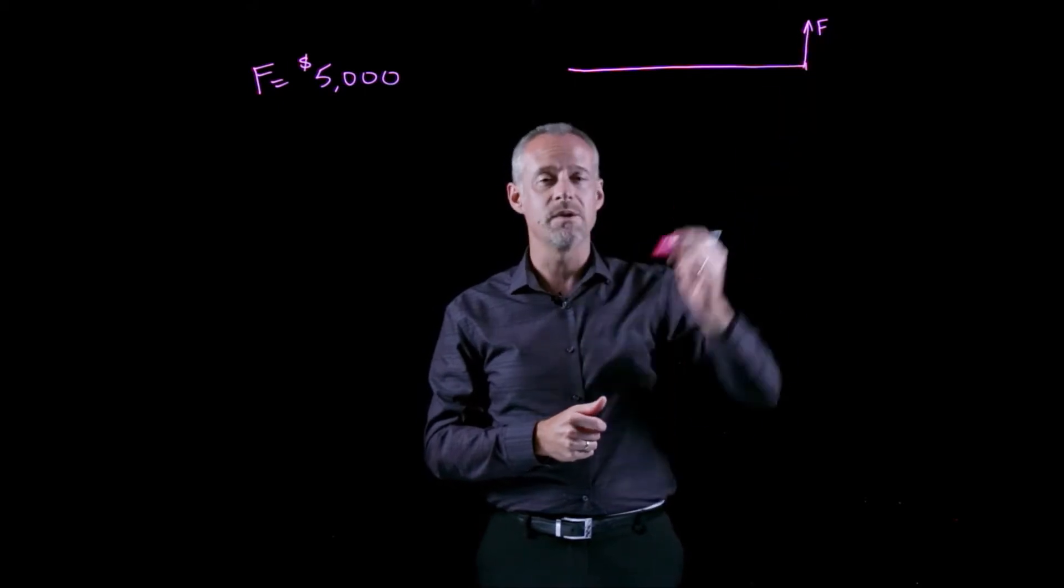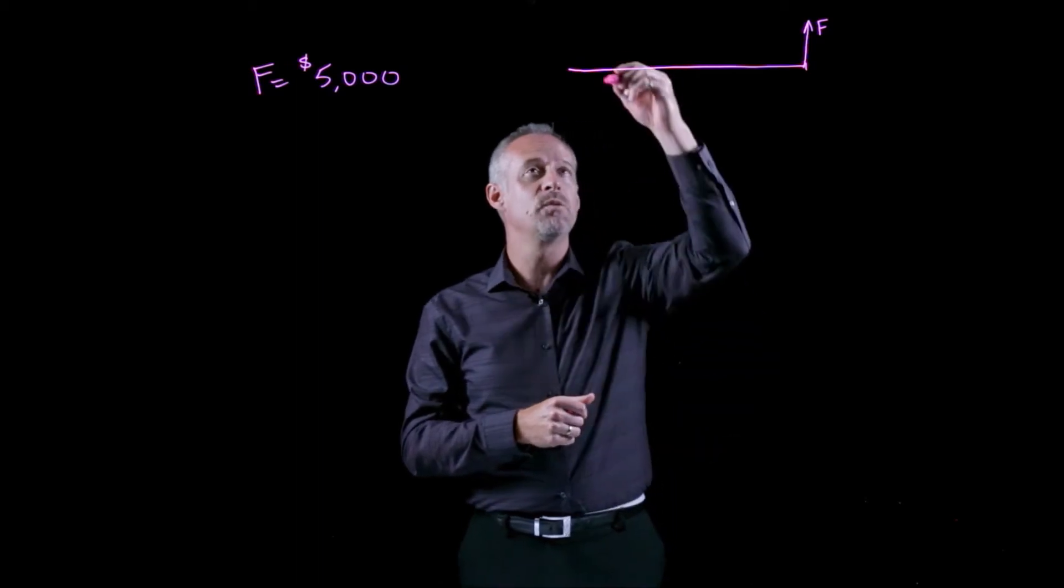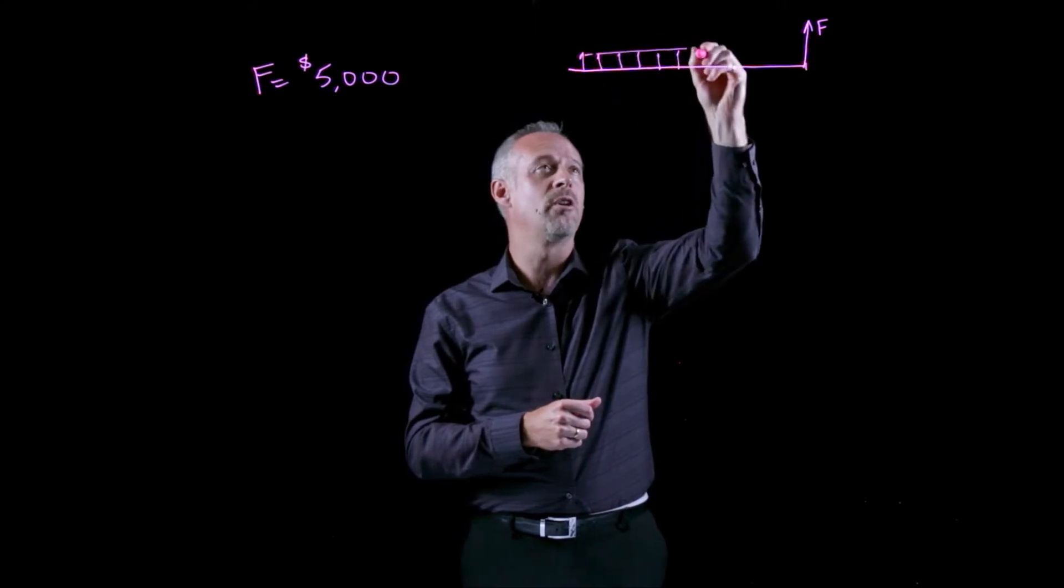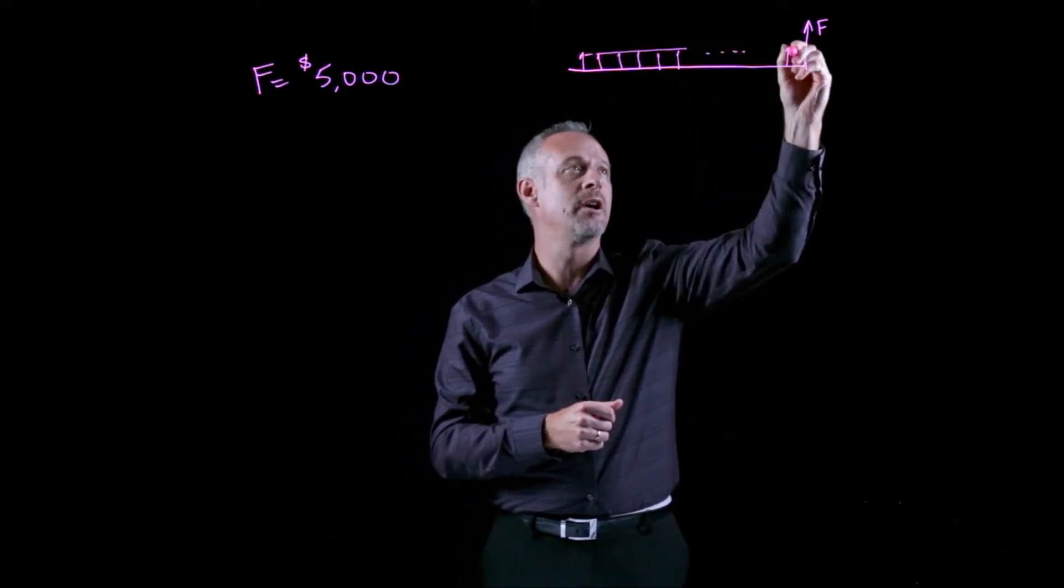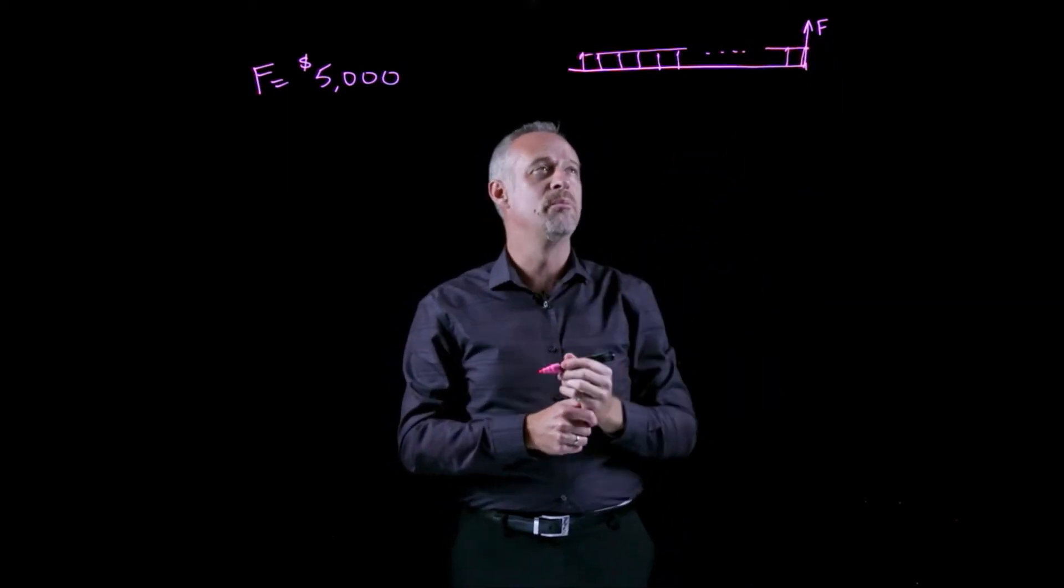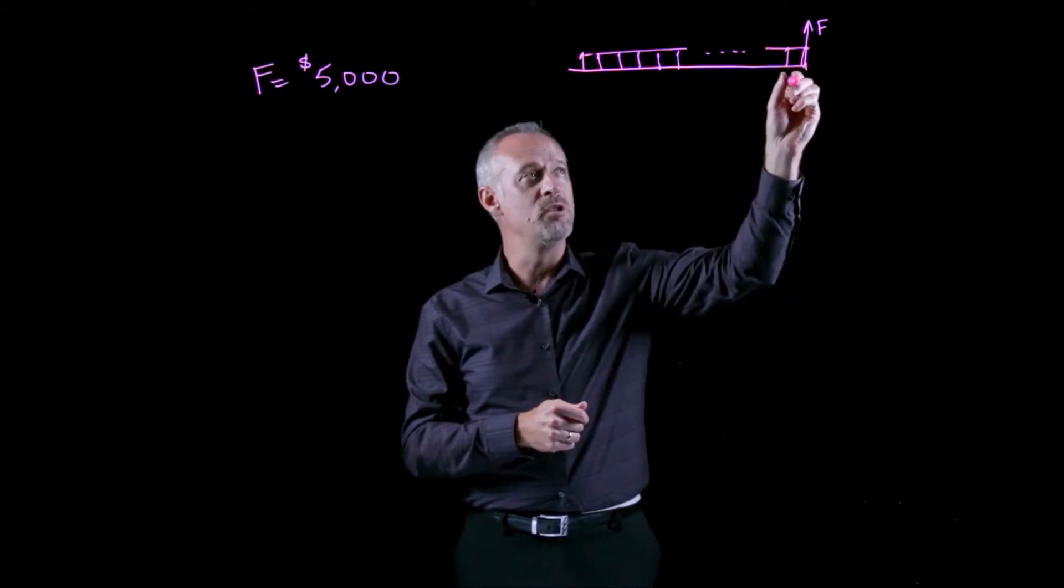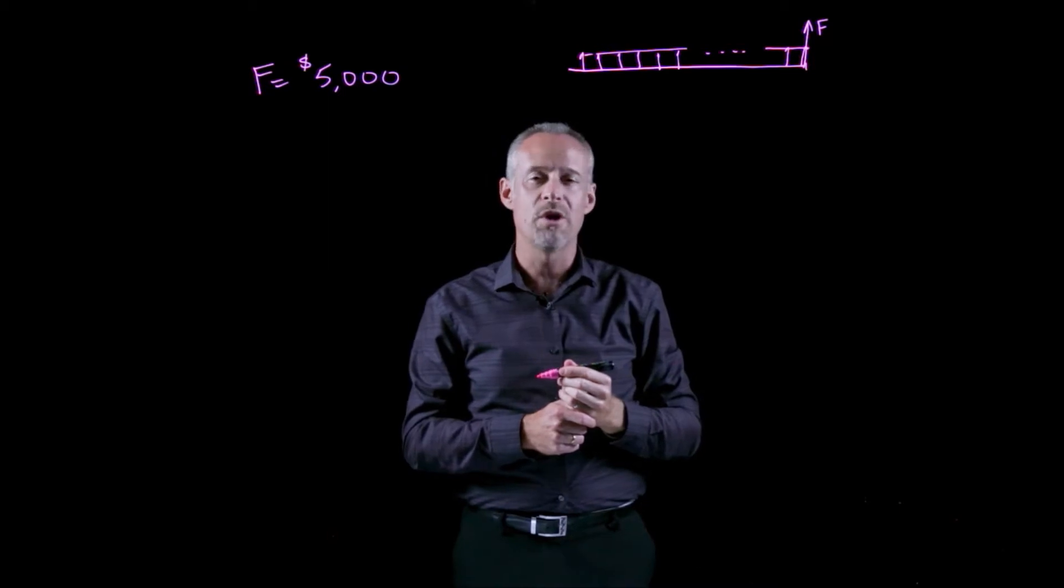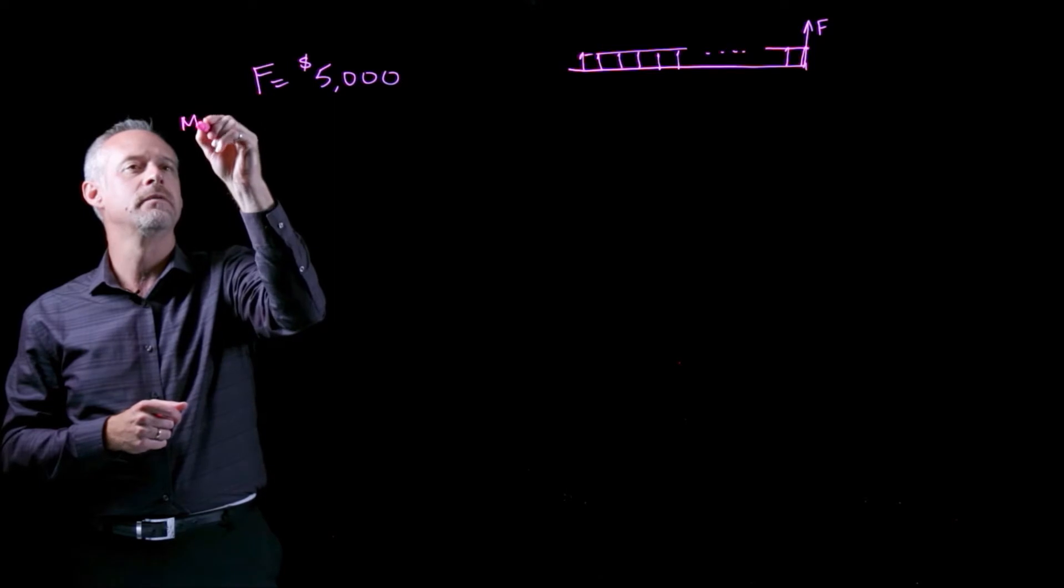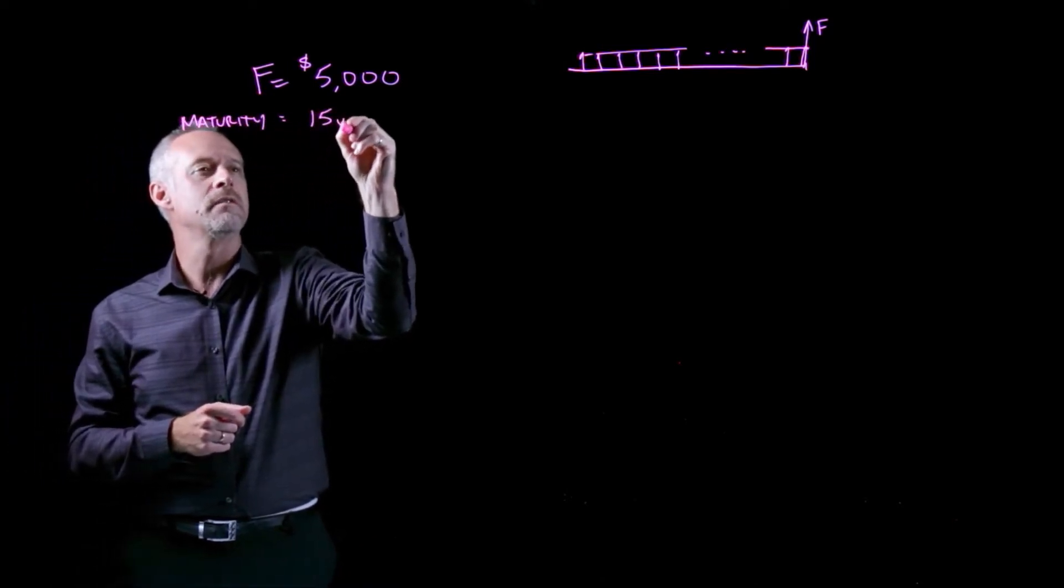The other thing that we buy when we buy a bond is an annuity. The annuity continues on until the end of what we call the maturity of the bond. That point in time in the future when you receive the face value, we call the time to maturity. In this problem, we're told that the maturity of the bond is 15 years.